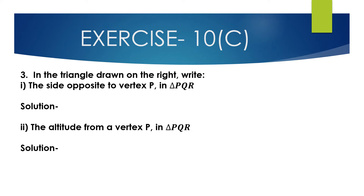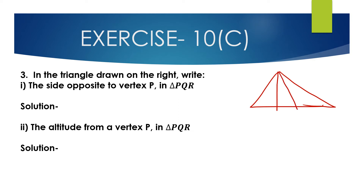Now question number 3. In the triangle drawn, referring to triangle PQR with points P, Q, R, S, and T marked. First bit: the side opposite to vertex P in triangle PQR. P is the vertex, and the side opposite to vertex P is QR.